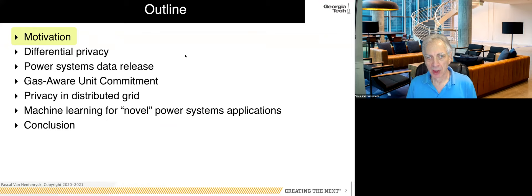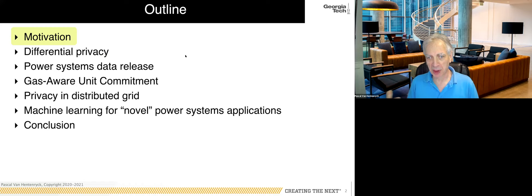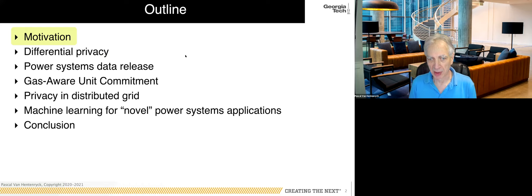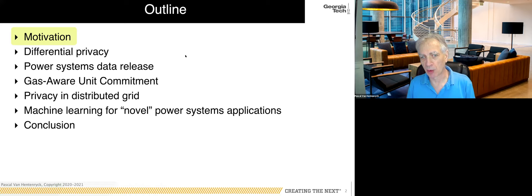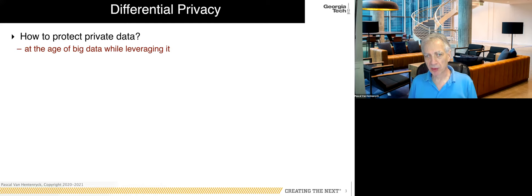This is the outline of the talk. I'll start with some motivation, then talk about differential privacy — what it is, what it does well, and some important properties. Then I'll cover three applications: power system data release in a privacy-preserving fashion, privacy when multiple infrastructures need to cooperate, and privacy in the distributed grid. Finally I'll discuss machine learning for power system applications. The presentation will be at a high level, but I'll quote references to the papers.